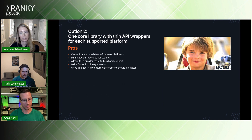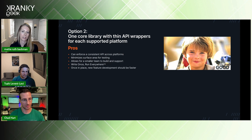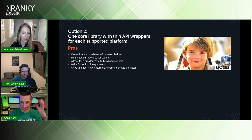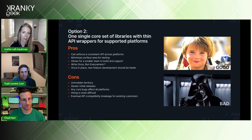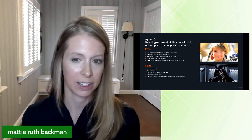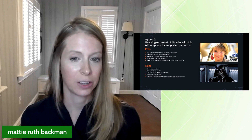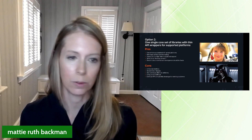Option two is to build one core library with just a thin set of API wrappers for every platform you want to support. This enforces a consistent API across platforms, minimizes and unifies testing to one code base with minimal platform-specific testing, allows a smaller team to build and support it, and any new feature is built once and immediately available on all platforms. The downsides are untrodden territory with unsolved problems, all platform releases being dependent on the core slowing initial releases, core bugs affecting all platforms, more difficult hiring, and eventually needing to port all existing customers to the new API.